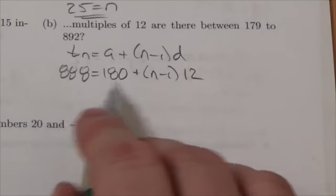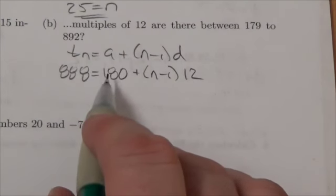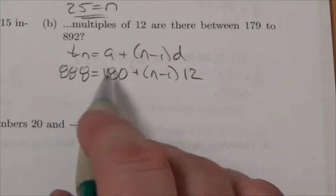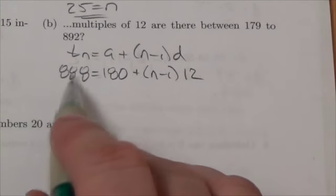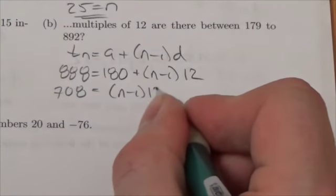I've got two terms on the right-hand side. I'm trying to solve for n, so I'm going to first get rid of the term that doesn't have an n in it—that's the 180. Subtracting 180 from both sides, I get 708 equals (n minus 1) times 12. Now I'm going to divide both sides by 12.